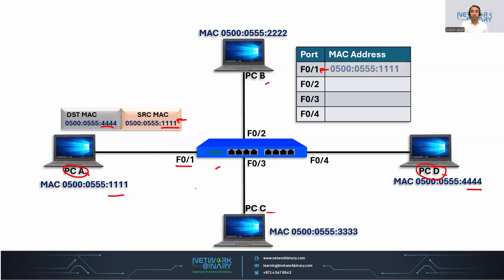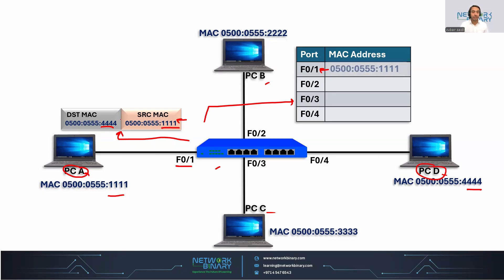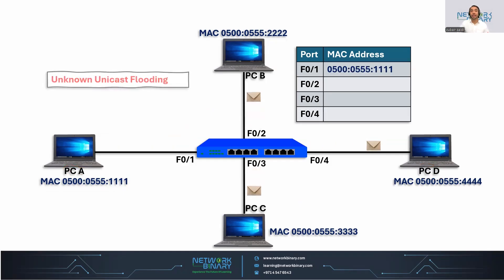Now what's next? The switch is going to forward the frame. In order to forward the frame, it will be looking in the layer 2 frame or header — what is the destination MAC address? And in order to forward the frame, it looks at its CAM table or MAC address table. As of now, this MAC address — PCD's MAC address — we don't have inside the MAC address table.